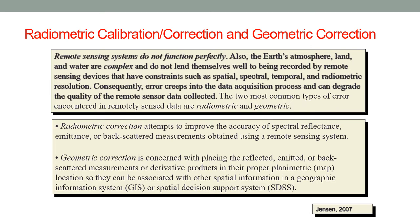Radiometric correction attempts to improve the accuracy of spectral reflectance, emittance, or backscattered measurements obtained using a remote sensing system. Geometric correction is concerned with placing the reflected, emitted, or backscattered measurements or derivative products in their proper planimetric location — meaning inside a geographic coordinate system — such that they can be associated or in registration with other spatial information in a geographic information system or spatial decision support system. In other words, geometric correction ensures the satellite image lines up exactly with other remotely sensed data or GIS information.